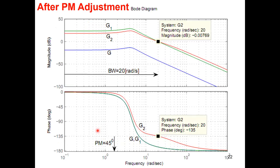After phase margin adjustment, this is what we got. If you look at the zero dB line on the gain or magnitude plot of the Bode plot, it crosses the line at 20 radians per second - that is the bandwidth. At that point on the phase plot, the phase is now negative 135 degrees, which means from here you have another 45 degrees to minus 180 degrees, which is the unstable situation. So the 45-degree margin is healthy and sufficient.